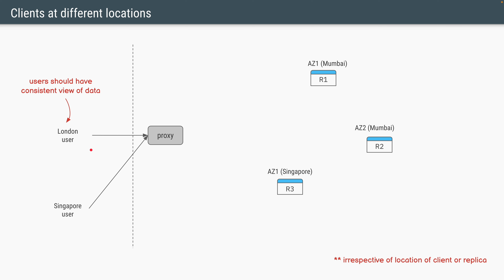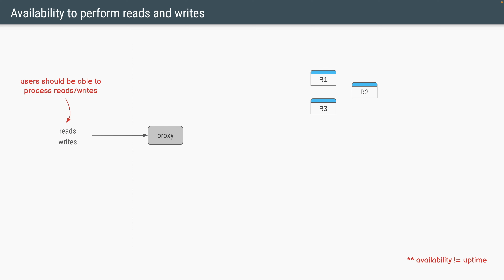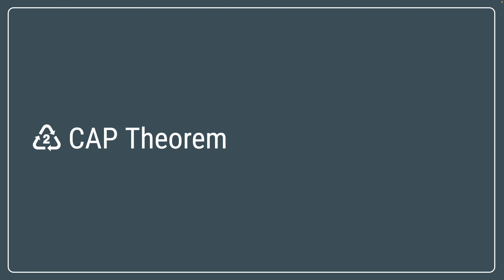Similarly, the location of the user itself doesn't matter. Multiple users from different locations might try to access the same data and all these users should be able to see the same consistent view of data. Similarly, availability is also a concept which should be looked at from a client point of view, which means users should be able to process their reads and writes irrespective of the location of the replicas or the users themselves. If a replica goes down, we need to determine whether the system as a whole is still available to perform reads and writes. With these three concepts clear, CAP theorem will be straightforward to understand.